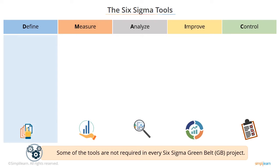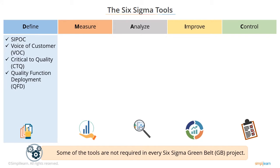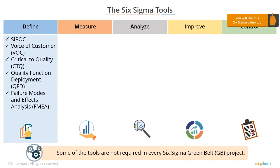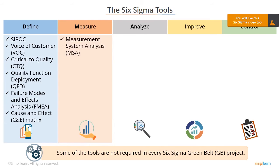In the Define phase, we use SIPOC, Voice of the Customer (VOC), Critical to Quality (CTQ), Quality Function Deployment (QFD), Failure Modes and Effects Analysis (FMEA), and the Cause and Effect matrix. In the Measure phase, we use Measurement System Analysis (MSA), Control Charts, Process Capability, and Normality Plots.